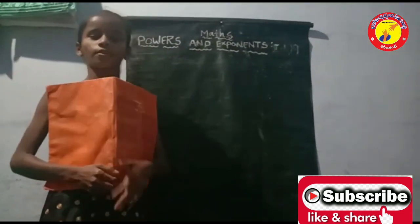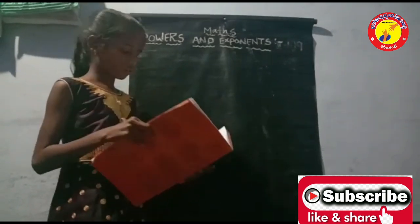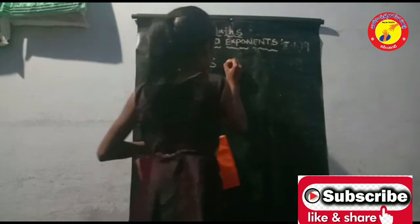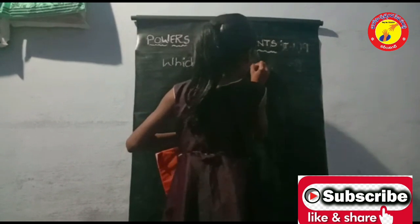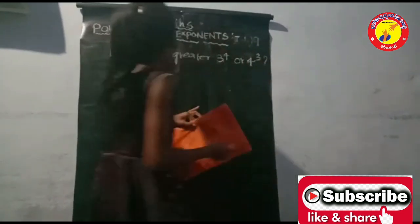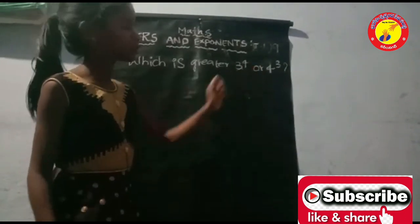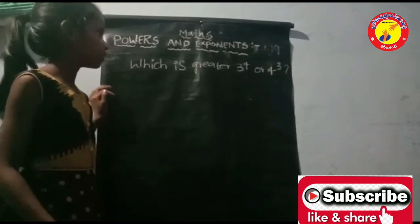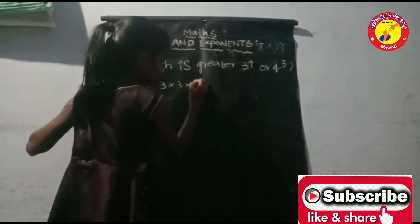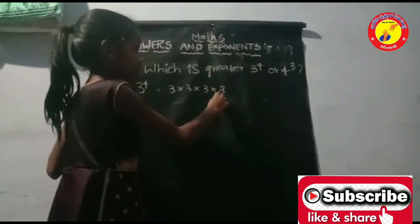Now, another problem in exponential form: which is greater, 3 to the power of 4 or 4 to the power of 3? The solution — first, 3 to the power of 4. We write: 3 into 3 is 9, 9 into 3 is 27, 27 into 3 is 81.